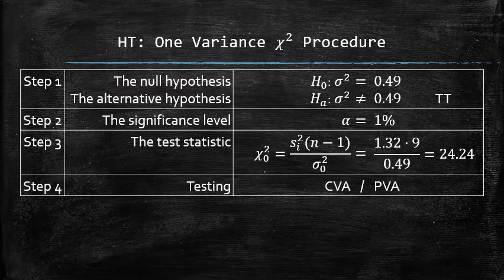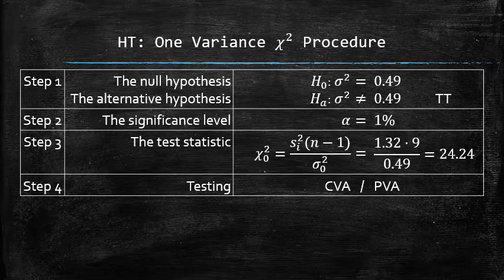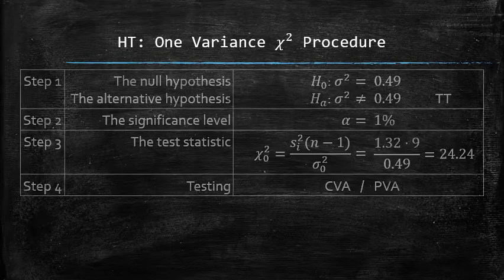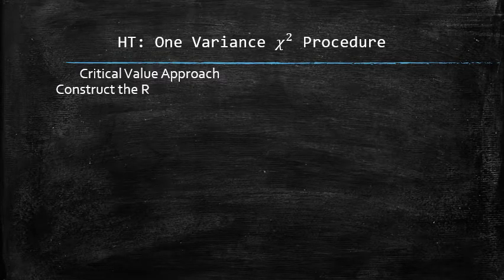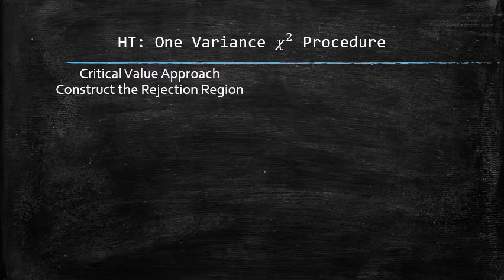Next, we will test the hypothesis using two different approaches, the critical value and the p-value. In the critical value approach, we construct the rejection region. In this approach, we need to know the significance level alpha and the type of the test.